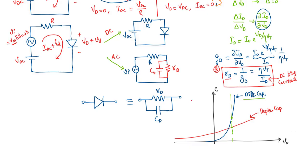In forward bias you will have RD in parallel with CD. For reverse bias, it will be simply a capacitance — the junction capacitance or the diode capacitance — which is in fact the depletion capacitance. This is the reverse bias small signal model.